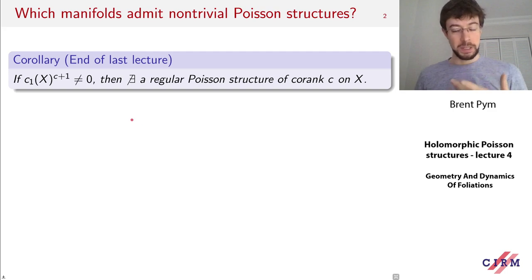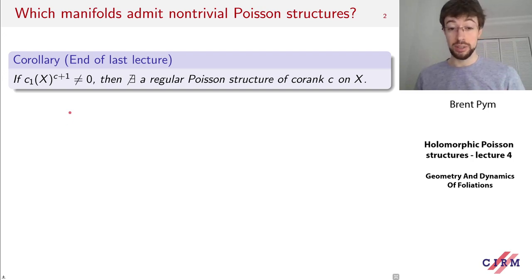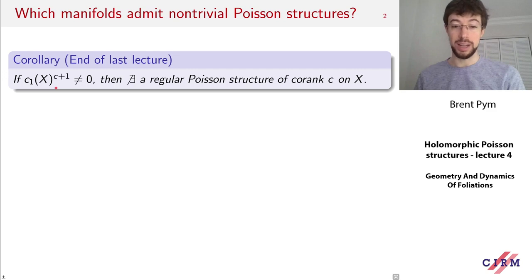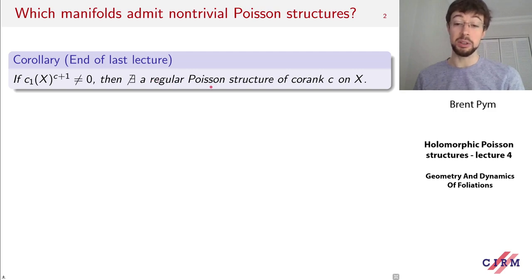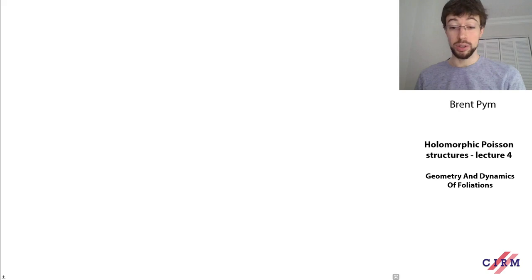I want to bring up again this corollary that came up near the end of the last lecture, which was a topological constraint on the existence of regular Poisson structures. It says that if you have a complex manifold X and the C-plus-first power of its first Chern class is non-zero, then that manifold cannot possibly exhibit a regular Poisson structure whose co-rank is equal to C. This is a topological obstruction controlled by the first Chern class.